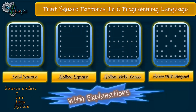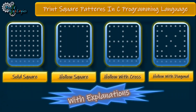So yeah, enough talk — let's get started. In this video what we are going to do is write code to print square patterns, namely solid square, hollow square, hollow square with cross, and hollow square with diagonal. But before diving into that, I want to provide some basics or fundamental tools, and these tools will eventually become the basis for printing any kind of patterns.